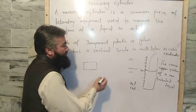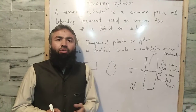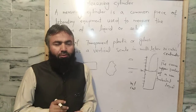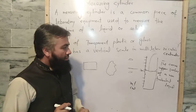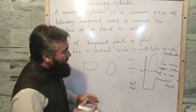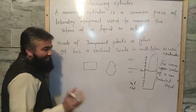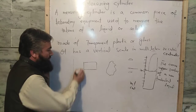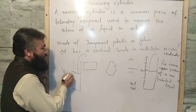If we have an irregular solid object, it is difficult to find the volume by a simple formula. So for this purpose, to find the volume of an irregular solid object, we use a measuring cylinder. First of all, we pour liquid into the measuring cylinder and find the initial volume.